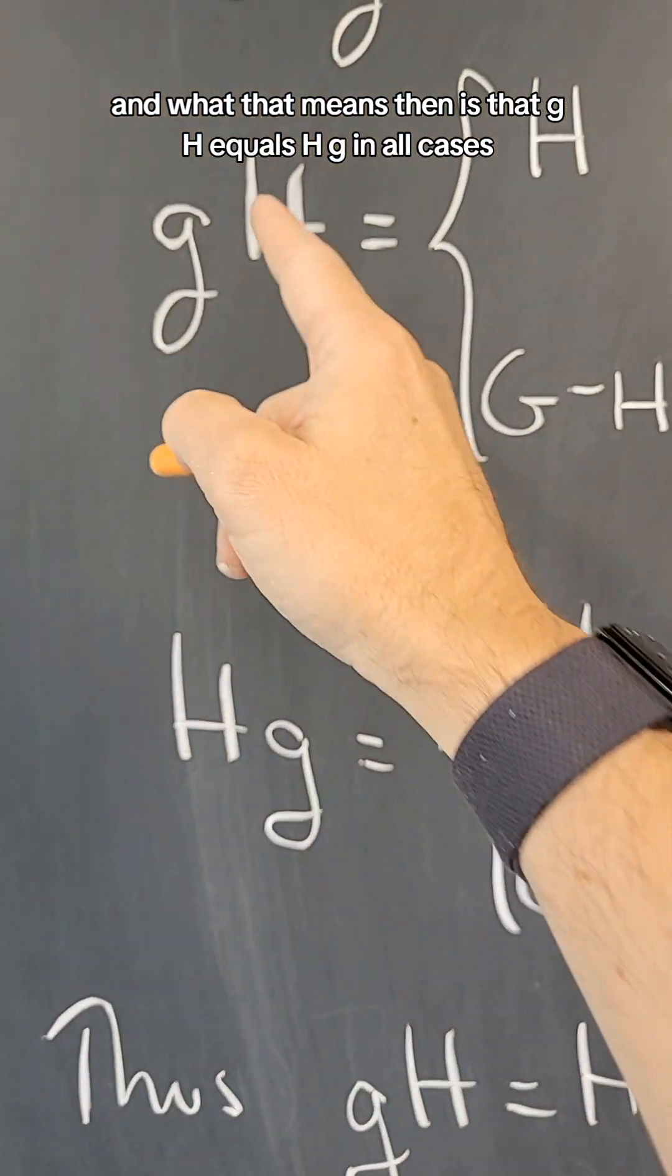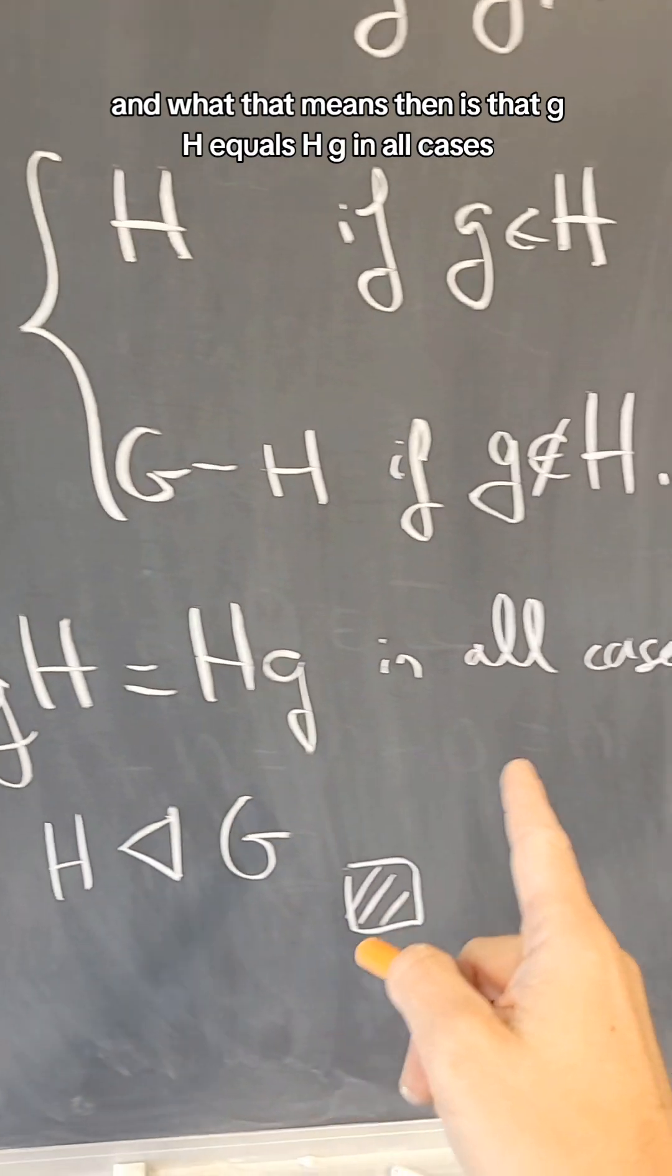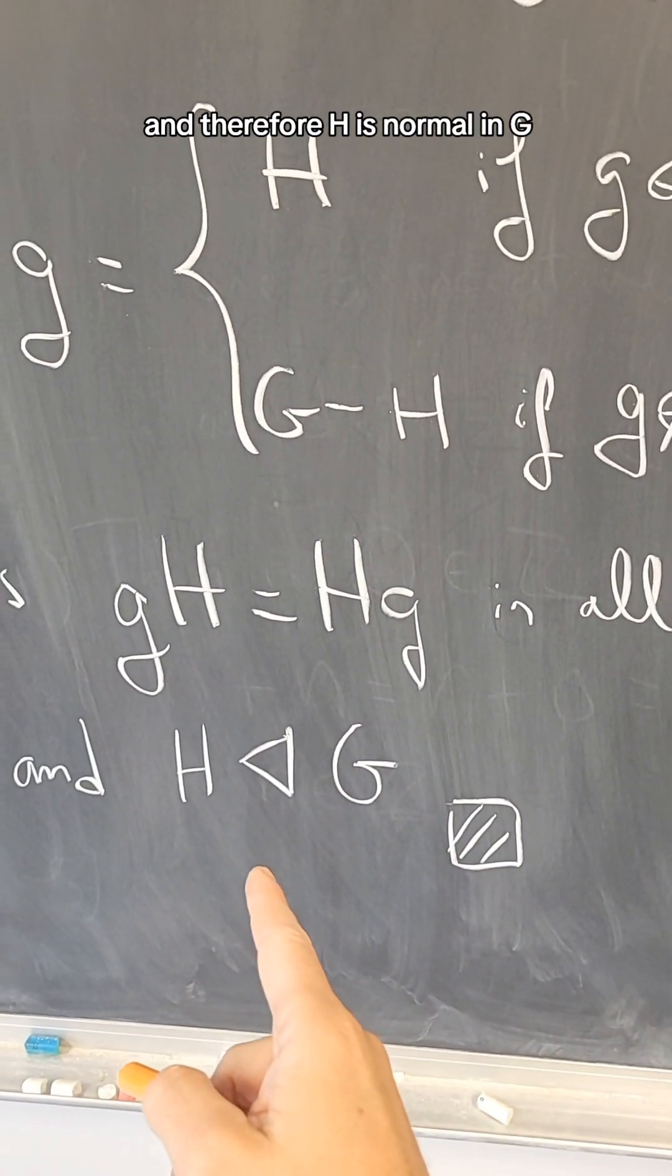And what that means then is that gH equals Hg in all cases, and therefore H is normal in G.